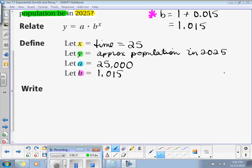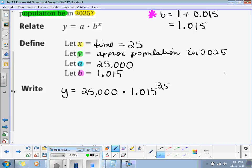So, now we can substitute all of our variables, all of our values, into our function. We have Y is equal to A, which is 25,000, times B, which is 1.015, raised to the X, which is 25.